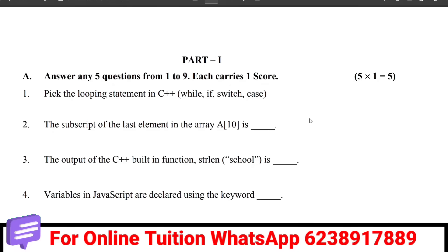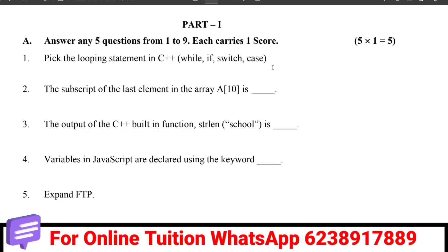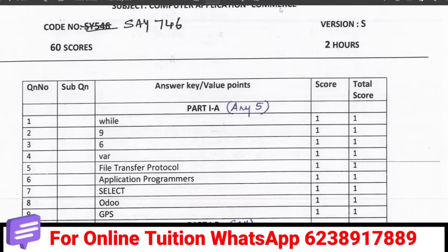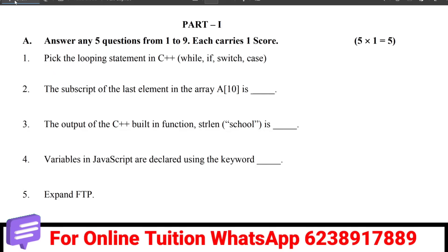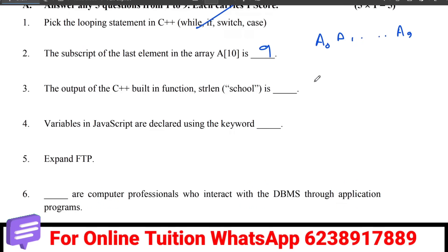Moving on to the third question paper. Looping statements: while, if, switch-case — note that switch-case is not a looping statement. Array subscript: the last element of array A[10] is A[9], because indexing goes from A[0] to A[9]. C++ built-in function strlen returns the string length — for the word 'school', the answer is 6. Variables in JavaScript are declared using the keyword 'var'. FTP — File Transfer Protocol — is repeated.